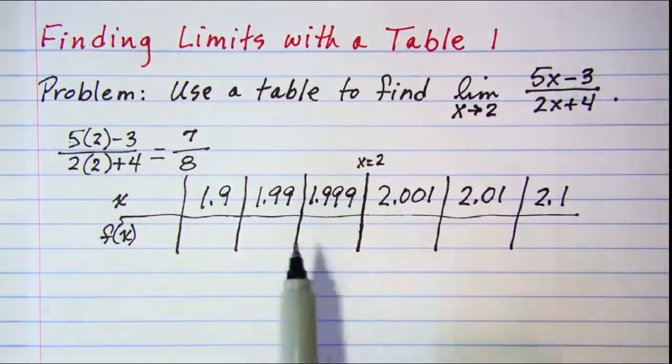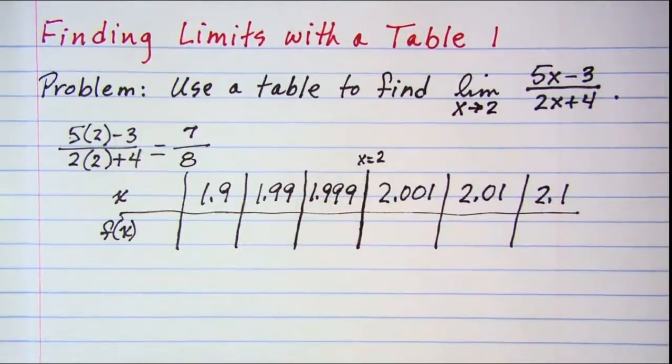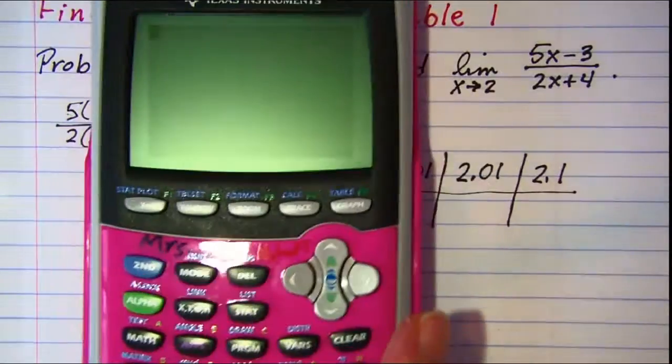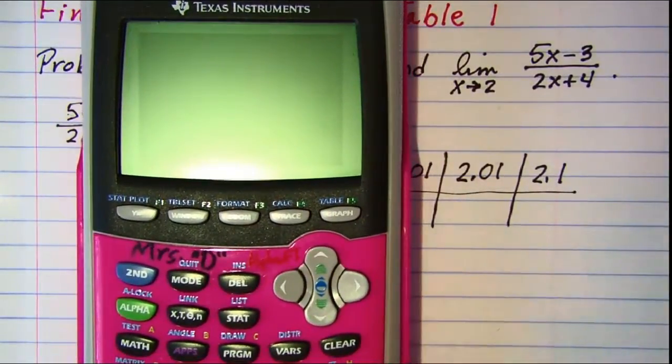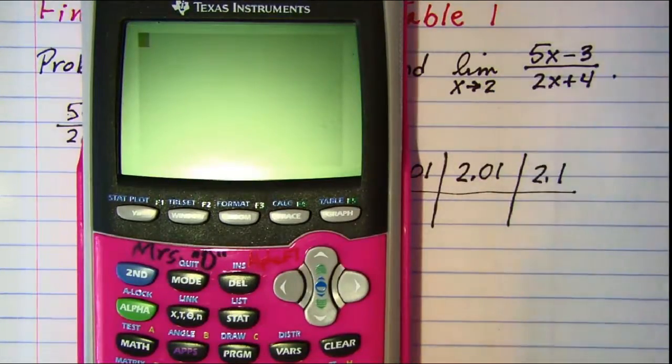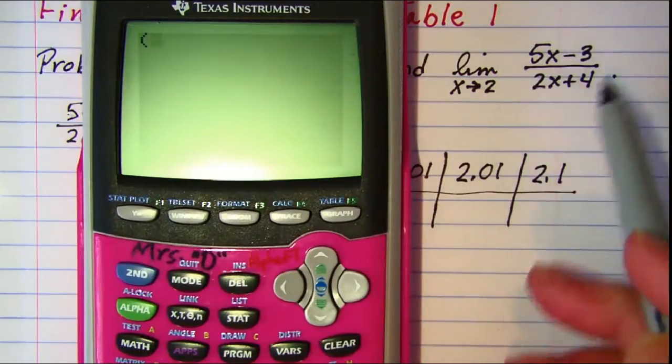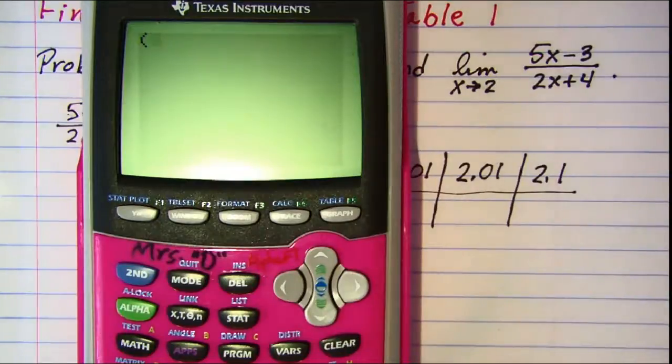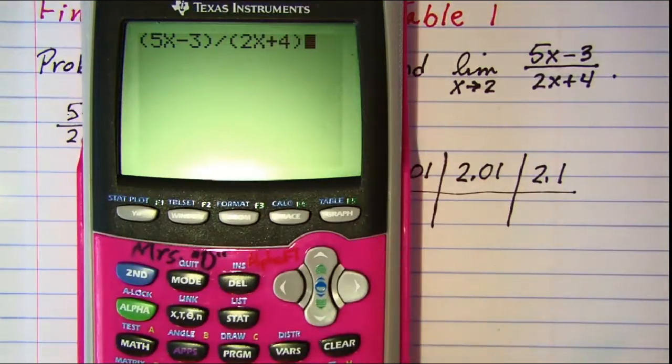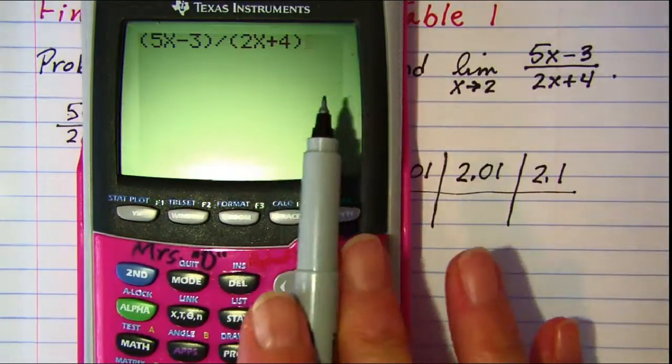So we'll substitute these values into our function and get values for the y. Using our calculator, if you have a TI-84 plus, an easy way to have the calculator do the substituting for you is to enter the function into your main screen using the x. So open parenthesis 5x minus 3, close the parenthesis, divided by open parenthesis 2x plus 4.